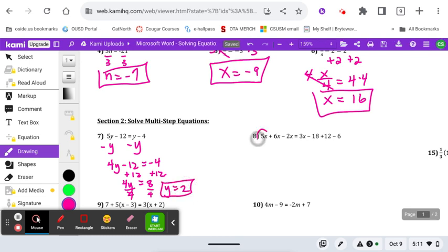Combining like terms, we've got five x's plus six x's, that's 11. 11 minus two is nine x's. On the right, we're going to combine negative 18 plus 12 minus six. That's going to make negative six minus six. Now we move the x's to the other side.